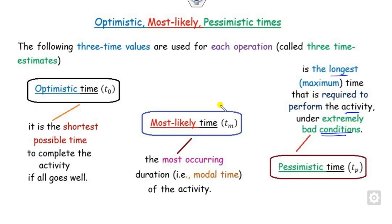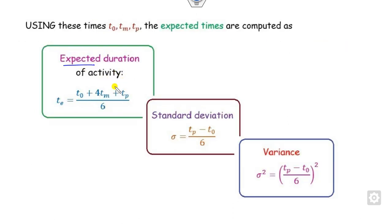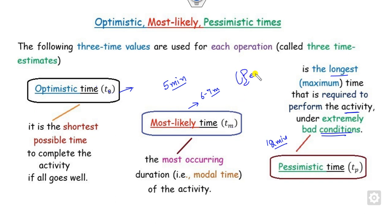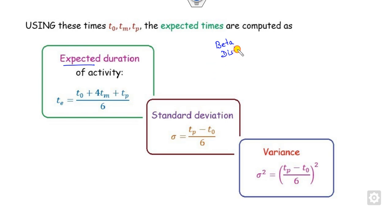For example, if you are able to understand this lecture within five minutes, that is the optimistic time. If you take six to seven minutes, that is the most likely time. If you take twelve minutes, that is the pessimistic time. Based on these three times — T0 (optimistic), Tm (most likely), and Tp (pessimistic) — we define the expected value, because this is a random variable that follows the beta distribution. All times T0, Tm, and Tp follow beta distributions. The expected value (mean) is defined using these, and the standard deviation is the range (Tp minus T0) divided by six. Once you know the standard deviation, you can compute the variance.